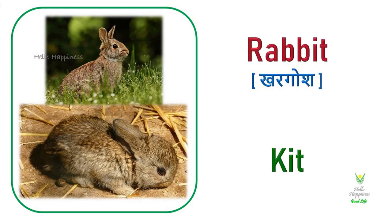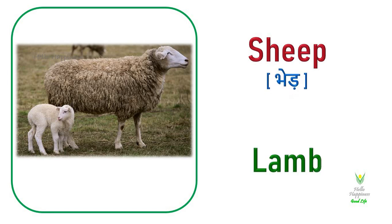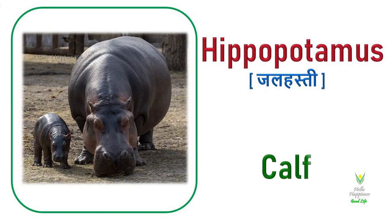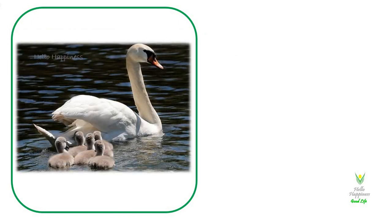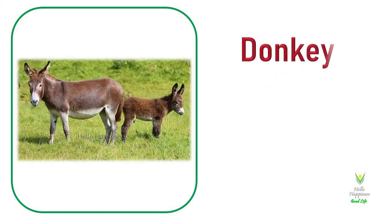Rabbit. Rabbit's young one is called a Kit. Deer. Deer's young one is called a Fawn. Sheep. Sheep's young one is called a Lamb. The young one is called a Foal.